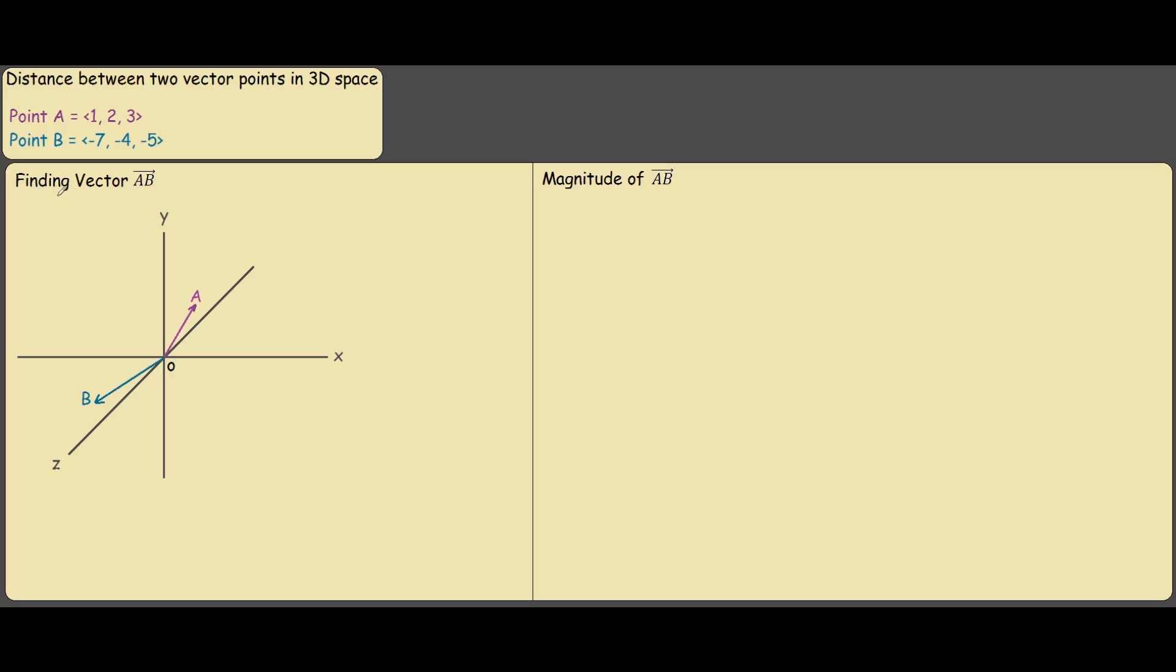First of all we find the vector AB, then we find the magnitude of the vector AB.